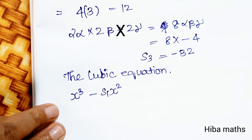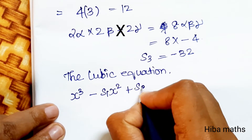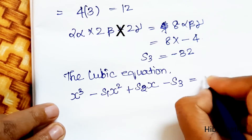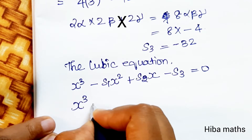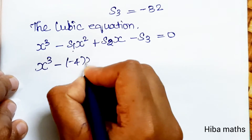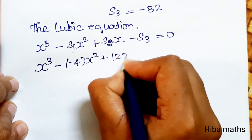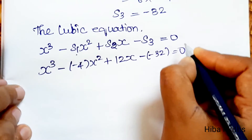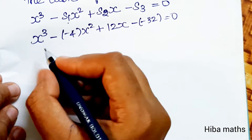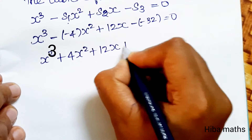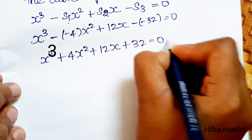The cubic equation is x³ − S1·x² + S2·x − S3 = 0. Substituting S1 = −4, S2 = 12, S3 = −32: x³ − (−4)x² + 12x − (−32) = 0, which gives x³ + 4x² + 12x + 32 = 0.